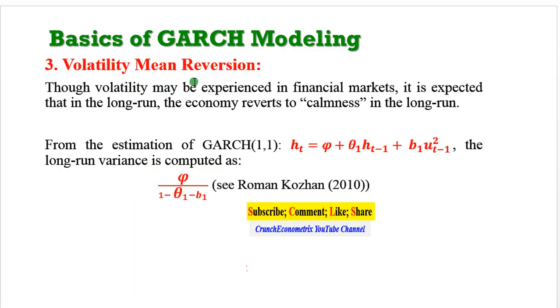Let's take the last one, volatility mean reversion. Though volatility may be experienced in financial markets, it is expected that in the long run the economy will revert to calmness. To construct the long run variance, you can see Rachev et al. 2010—this is how you construct the long run variance of the conditional variance. Volatility tends to revert back to its mean in the long run.